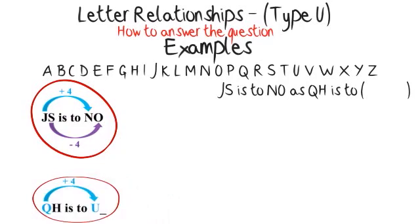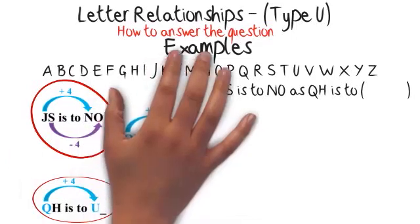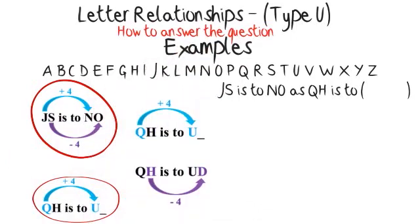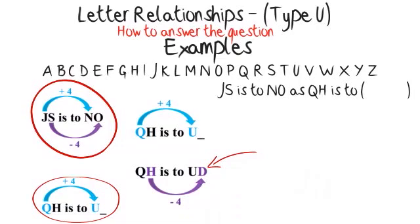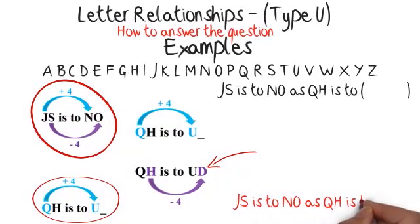Now using the same rules, it's easy to find the missing letters from the second pair. Q-H is to U. Counting on four from Q is U, so the first missing letter in the second pair is U. Q-H is to U-D. Counting back four from H is D, so the second missing letter in the second pair is D. So the answer is J-S is to N-O as Q-H is to U-D.